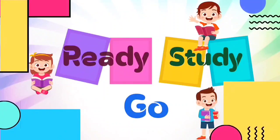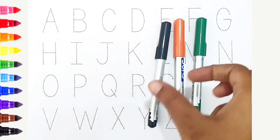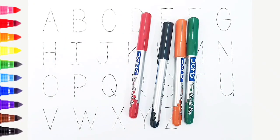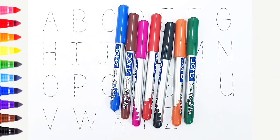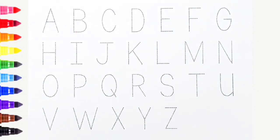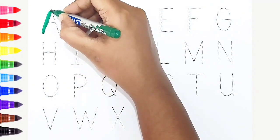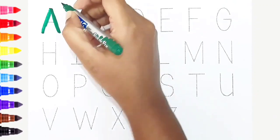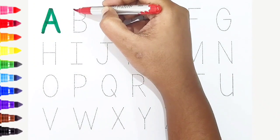Ready, study, go! Green color, orange color, black color, red color, pink color, brown color, blue color. Hi kids, today we can learn the alphabets from A to Z. A, dark green color, A is for aeroplane. B, red color, B is for buffalo.